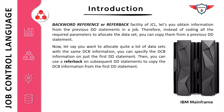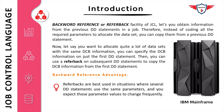Now let's look at the definition of referback in JCL. A backward reference, or referback facility, lets you copy information from previous DD statements. Therefore, instead of coding all the required parameters to allocate a data set, you can copy them from a previous DD statement. For example, if you want to allocate several data sets with the same DCB information, you can specify the DCB information on the first DD statement and use the JCL referback statement on subsequent DD statements to copy it.